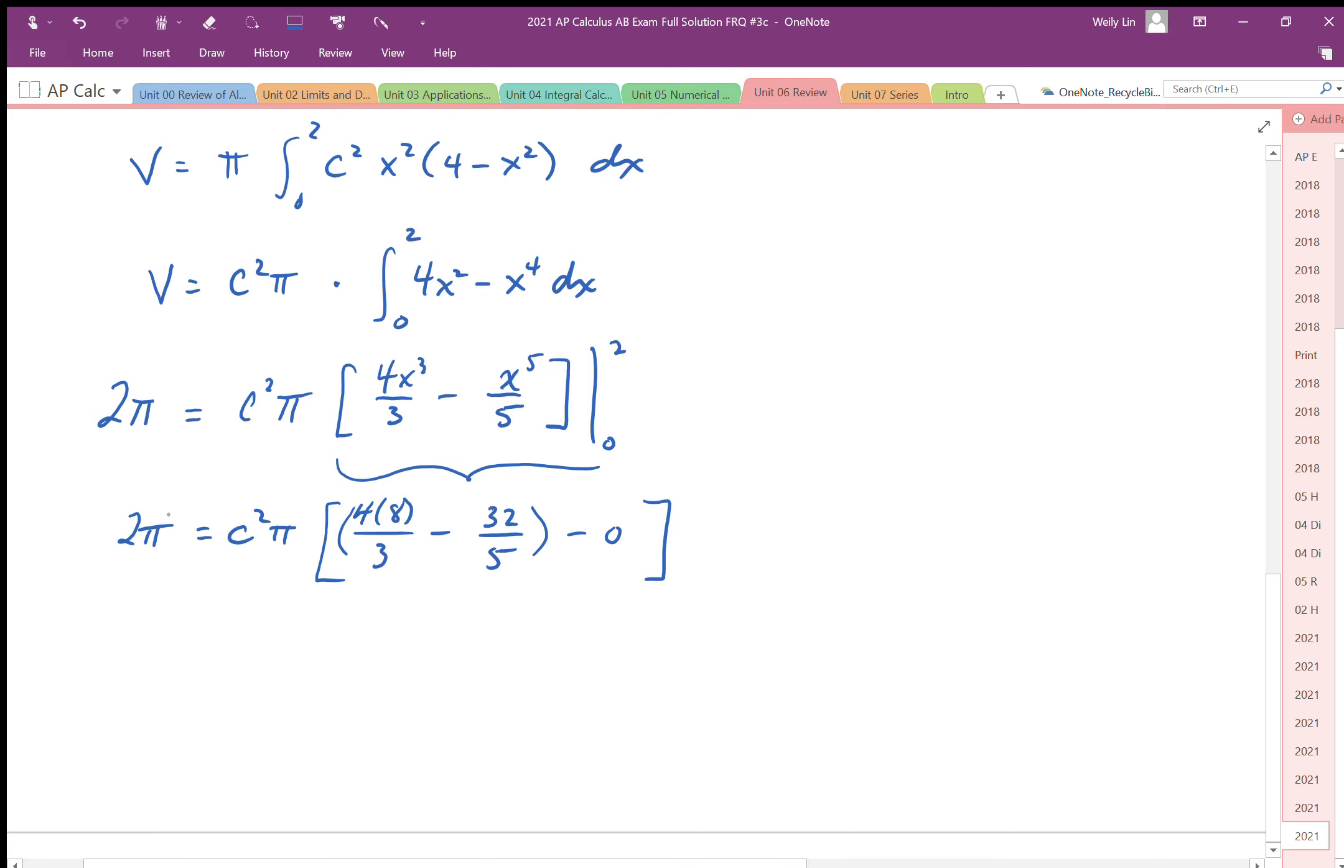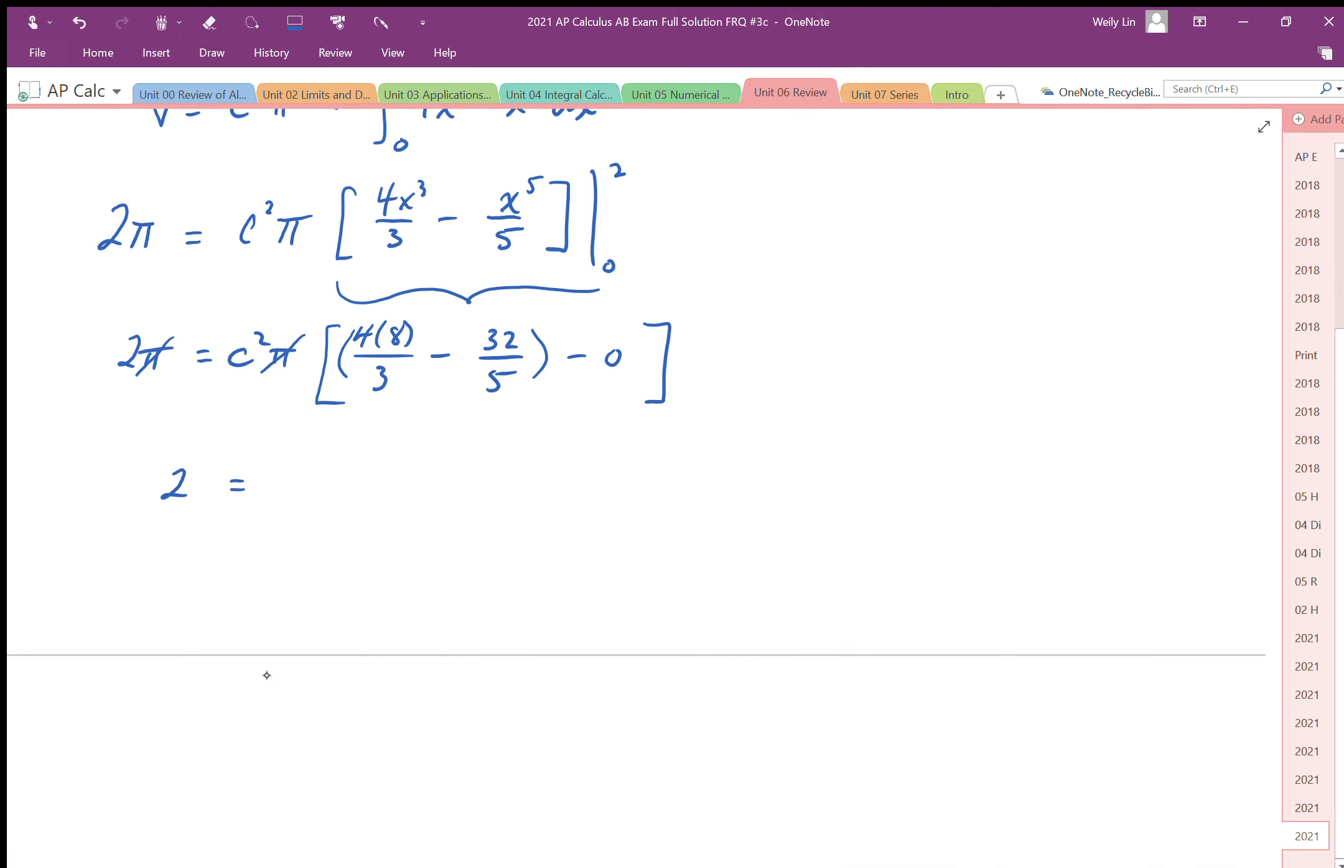So I'm going to cancel the π's out here, so I end up with 2 = c² times (32/3 - 32/5).